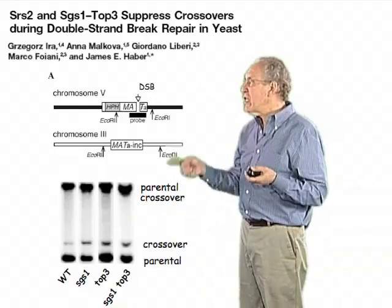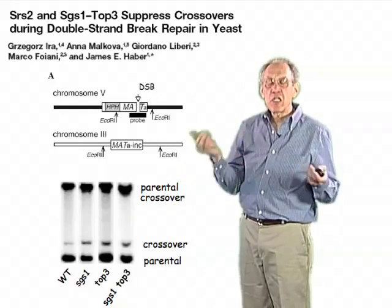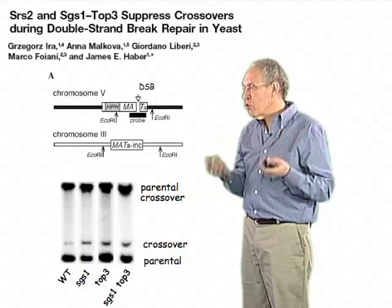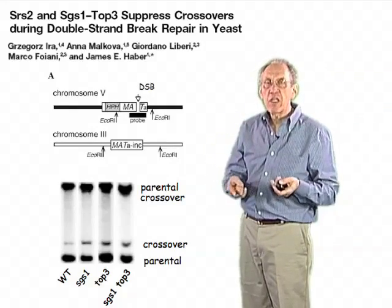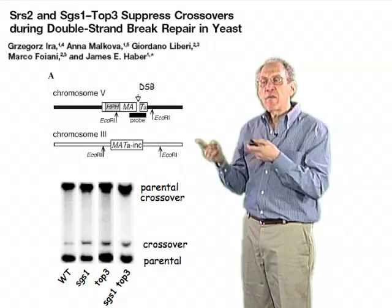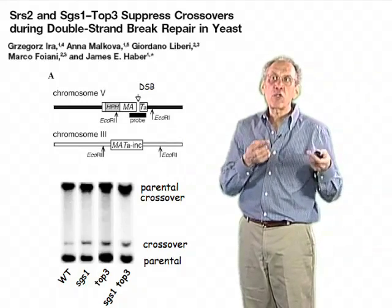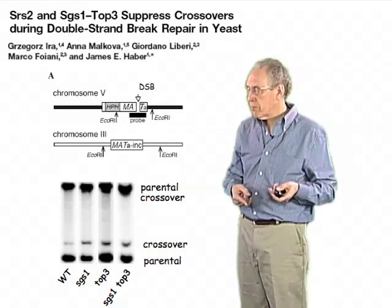So in Saccharomyces, as well as in human cells, the Bloom's helicase plays a role in dissolving double Holliday junctions and forcing more of the molecules to be resolved as non-crossovers.